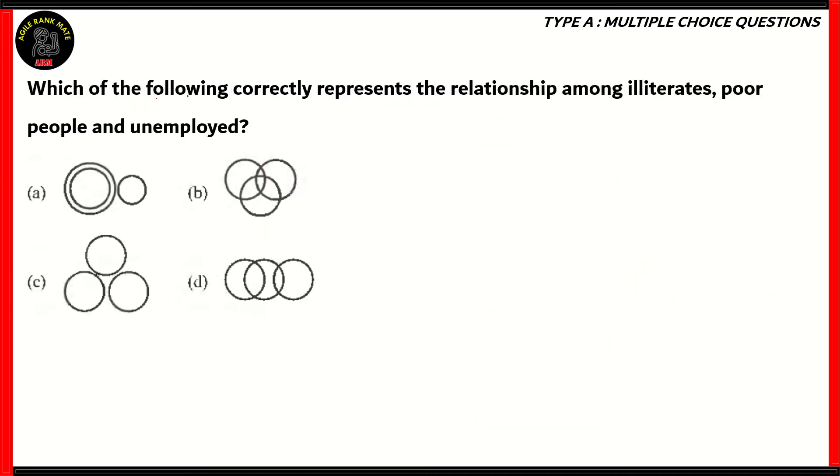Next question. Which of the following correctly represents the relationship between illiterates, poor people, and unemployed? Now, we have Venn diagrams representing the three. Now, it's important to note that illiterates are a separate group, poor people are a separate group, and unemployed, also a separate group. These three words represent different criteria. Illiterates criteria is education, poor people's criteria is money, and unemployed criteria is if you're holding a job or not.